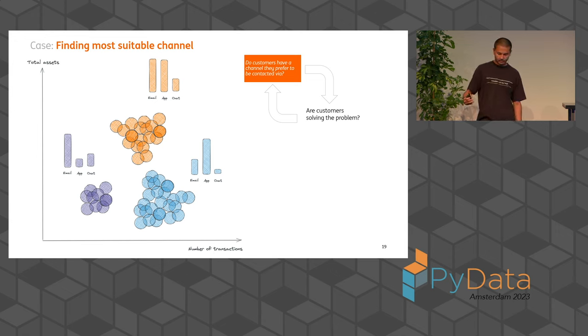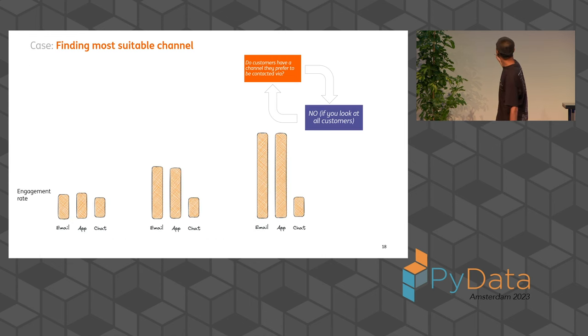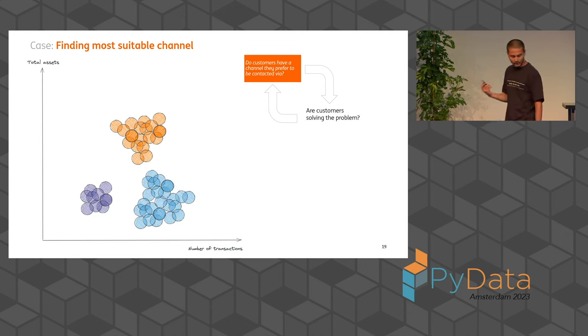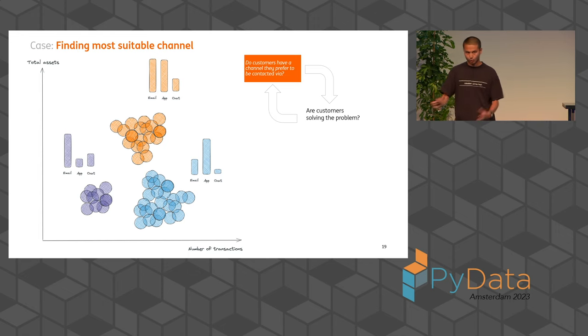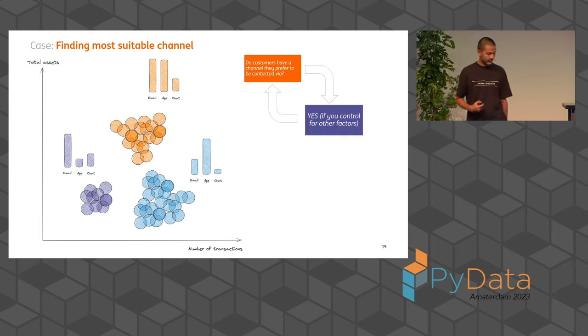And I think I also see sometimes data scientists shying away from these kind of analyses because they think that, oh, a data analyst can do this because you don't need a model to run this. But I think what data scientists don't often realize is that to any analysis, there's many layers of complexity. You can go as deep as you want. And sometimes you do need a bit of a different skill set to come to the conclusions that will help your team work on features and work on problems that are actually worth solving. So here, in this case, we concluded that, yes, there are signs of channel preference, and we proceeded to working on this problem.